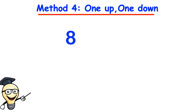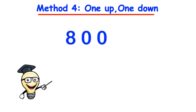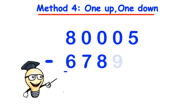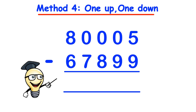But what happens when we have 4 digits or more? For instance, 80,005 take away 67,899 — it could take a bit of time to work out what the bottom number should be rounded to. So what we can do instead is use the 1 up, 1 down method. We only use this method when the bottom digits are bigger than the top digits.